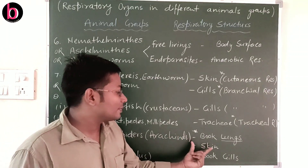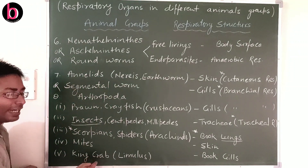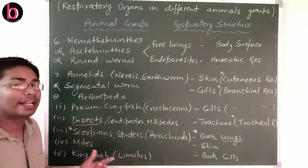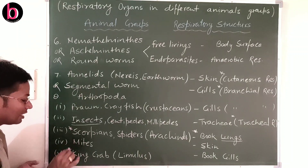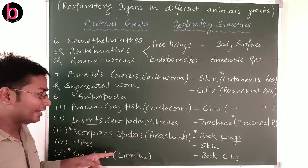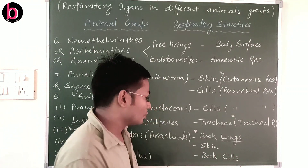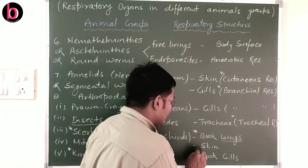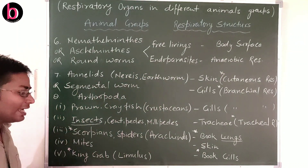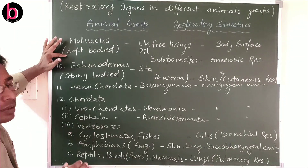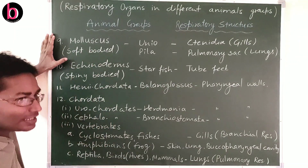King crab, also known as Limulus, is referred to as a living fossil. It has book gills — another unique and exam-relevant term. The organism that respires using book gills is king crab or Limulus.